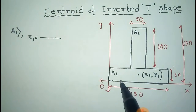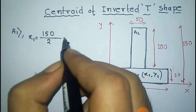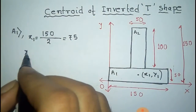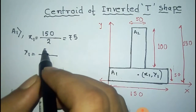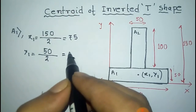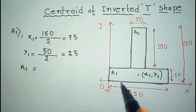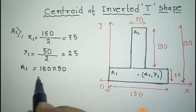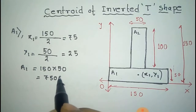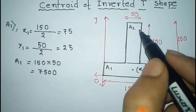For A1, x1 is given by the middle point of the total length along X, that is 150 divided by 2, which equals 75. For y1, it is the middle of 50, so 50 divided by 2, which equals 25. The area A1 is given by 150 times 50, which equals 7500 square units.